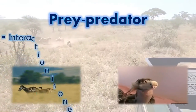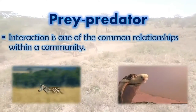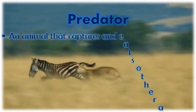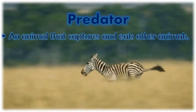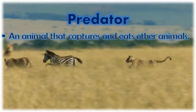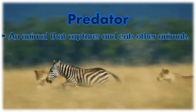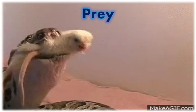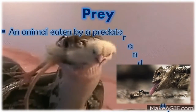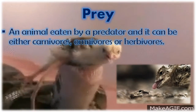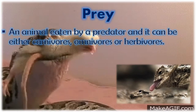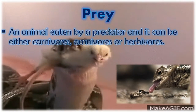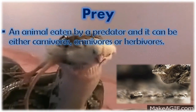Prey-predator interaction is one of the common relationships within a community between a prey and a predator. A predator is an animal that captures and eats other animals, like the lioness catching and trying to eat the zebra that is running for his life. Very sad, isn't it? How about the prey? Prey is an animal eaten by a predator. Can you see the lizard eating the ant? Who do you think is the prey? Exactly — the ant!